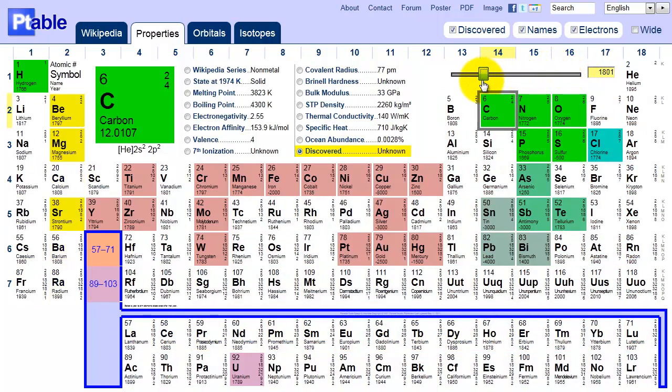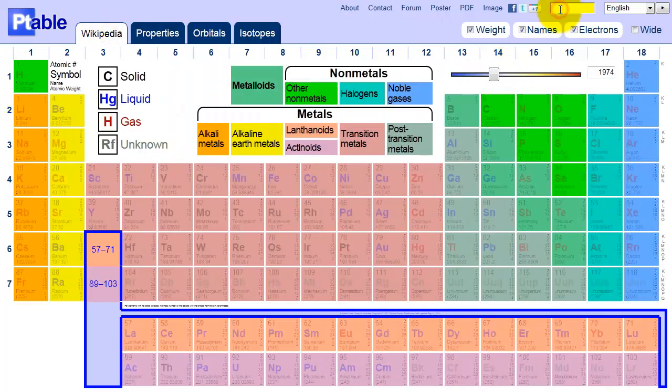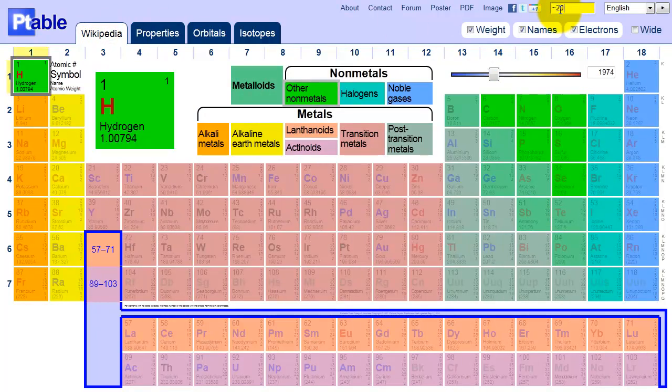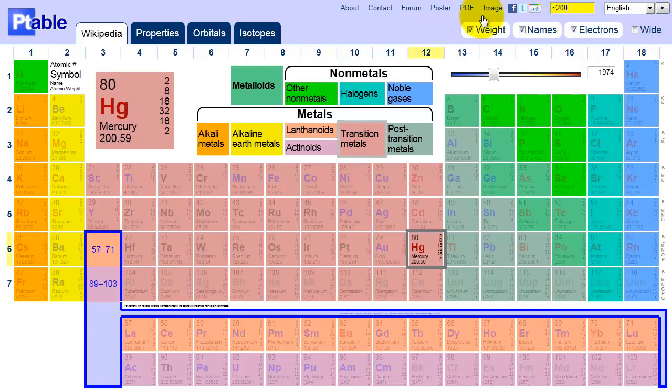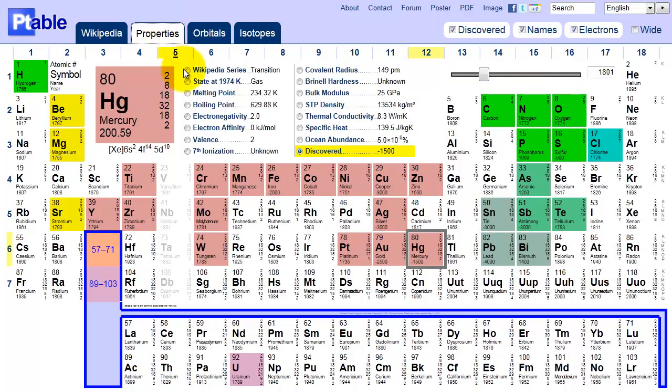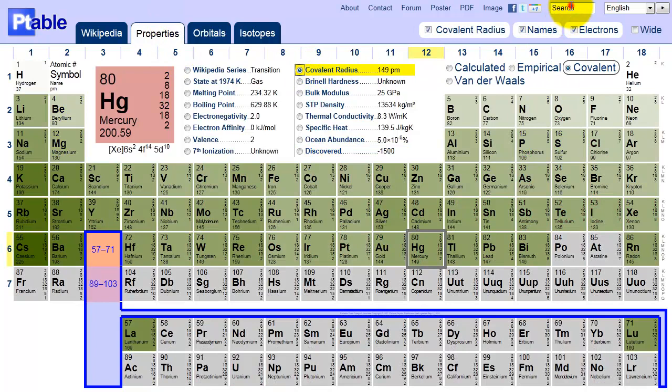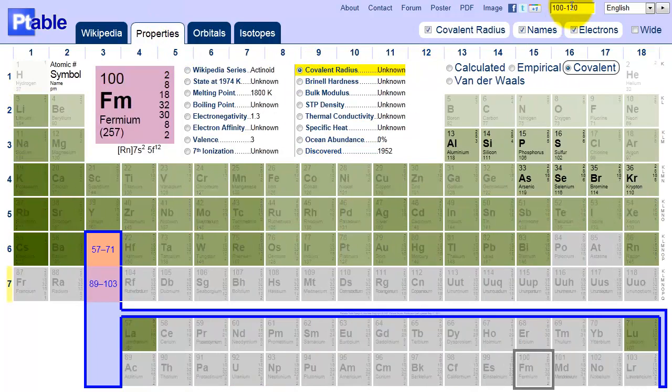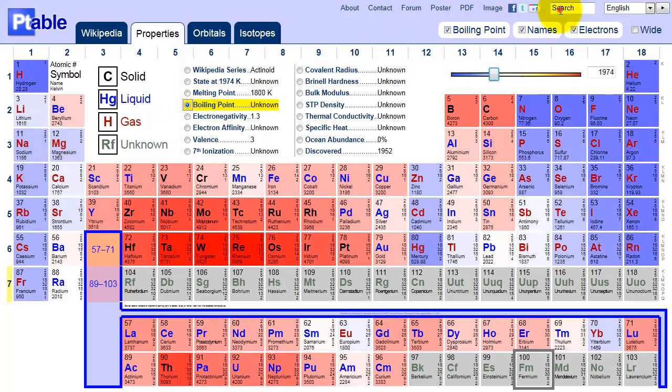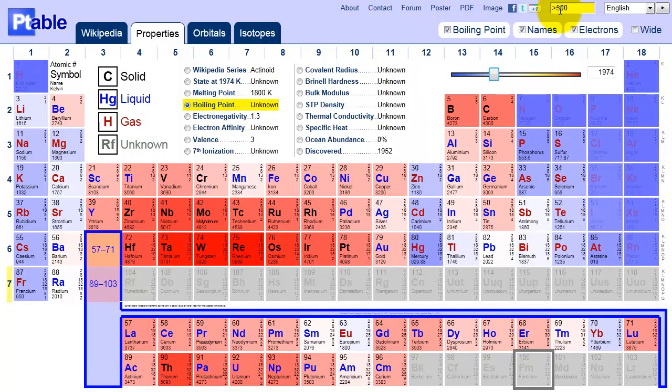You can also search for numeric expressions or ranges in any tab or view. Say you need to find the element with an atomic weight of about 200. Mercury. Under properties, let's find the elements with a covalent radius of 100 to 120 picometers. Or find all the elements that boil at greater than 5000 Celsius. Or all the elements with a valence of 2.